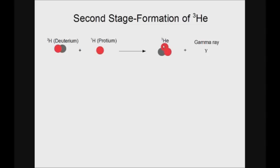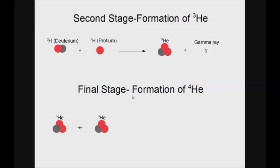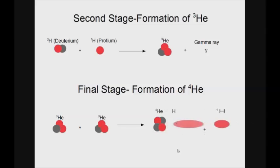Helium-3 is an isotope of helium. In the final stage, two helium-3 nuclei that were formed in the second stage react. This produces a helium-4 nucleus and two protium nuclei. So now you can see how four hydrogen atoms reacted in a series of processes to produce helium-4.